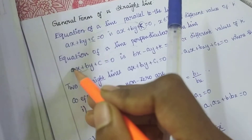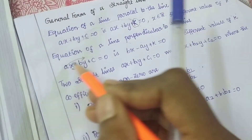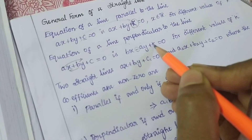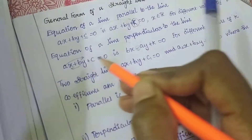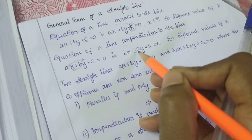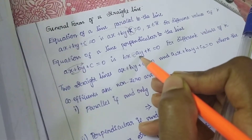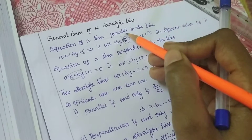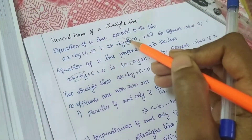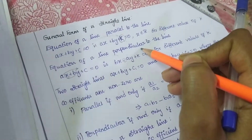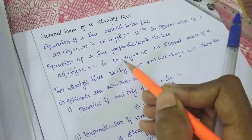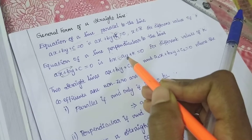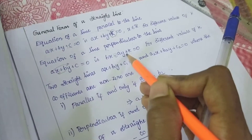For the equation of a line perpendicular to a given line, the equation is converted by interchanging the x coefficient and y coefficient, and the y coefficient becomes negative, plus k equals 0. So interchanging the coefficients and making the y coefficient negative gives the perpendicular form plus k equal to 0. The difference: parallel changes the constant to k; perpendicular interchanges x and y coefficients with y coefficient negative.